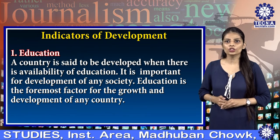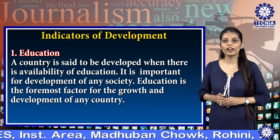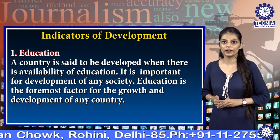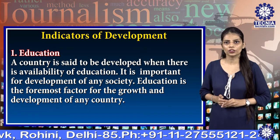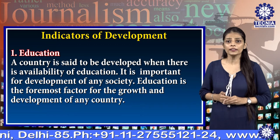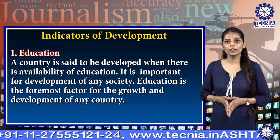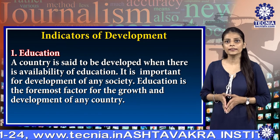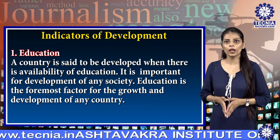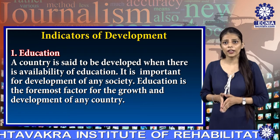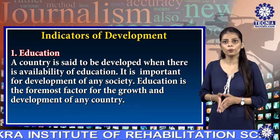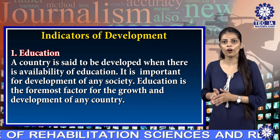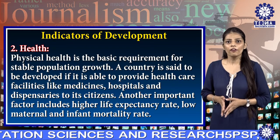The main social indicators of development include education, health, and employment. Education — a country is said to be developed when there is availability of education. It is important for the growth and development of any society.